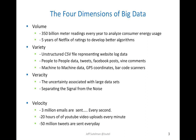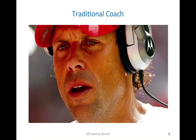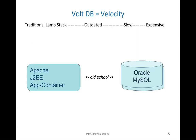Coach one has a traditional LAMP stack up in his analytics department. He calls up the analytics booth and says, 'Jim, I need to know the results of every fourth and one against the Raiders in the snow in December.' His analytics department is running this traditional LAMP stack, so they get that request and come back with the news.